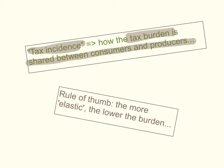As a rule of thumb, the more elastic, the lower the burden. We'll see how this rule of thumb applies when we look at diagrams and how the tax burden is shared between producers and consumers.